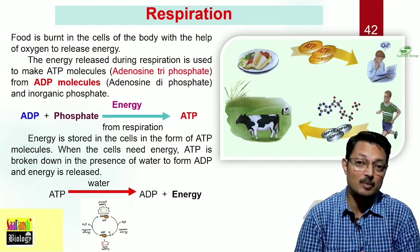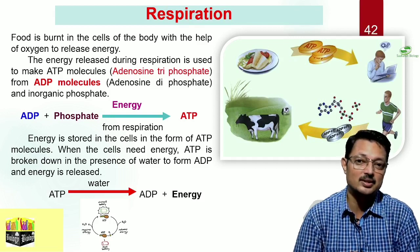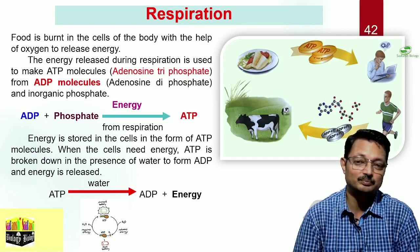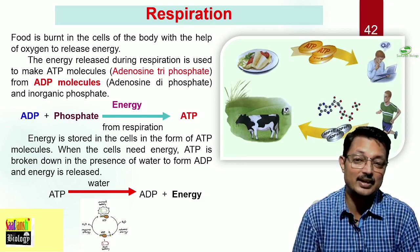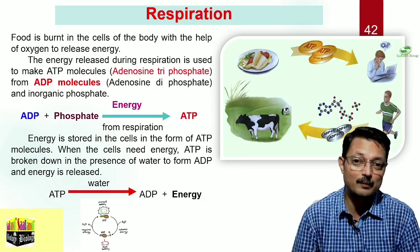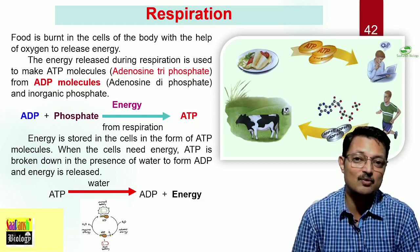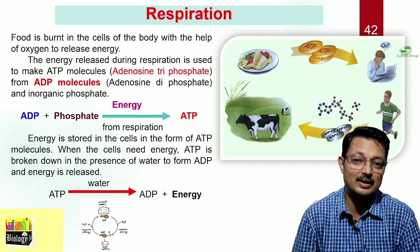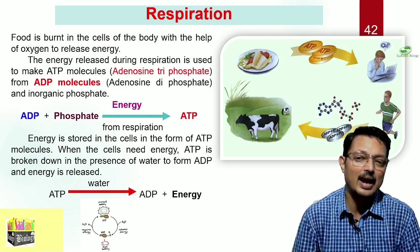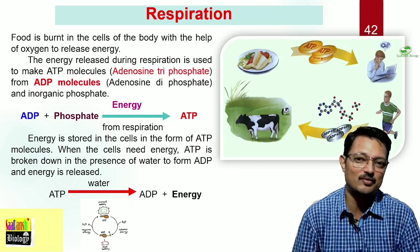Normally there can be two situations when glucose is broken down — whether it gets oxygen or not. If it gets oxygen, it will completely break down into carbon dioxide and water and produce a lot of energy. If it does not, it will break down into some intermediate compound like lactic acid, or ethanol and carbon dioxide, and produce less energy.